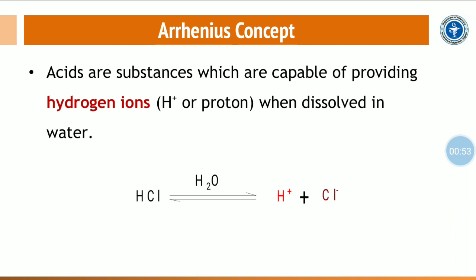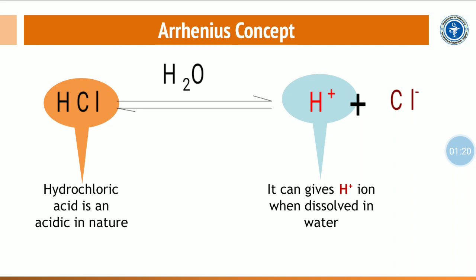According to Arrhenius theory, acids are substances which are capable of providing hydrogen ions (H⁺) or protons when dissolved in water. For example, hydrochloric acid (HCl) when dissolved in water ionizes into H⁺ ions and Cl⁻ ions. Because it produces H⁺ ions only when dissolved in water, it is called an acid according to the Arrhenius concept.